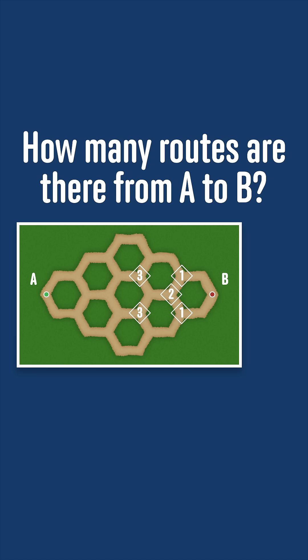We can keep working like this. Everywhere we have a decision to go either up or down, we add the number of routes from going up to the number of routes from going down, and we get the number of routes from that point.